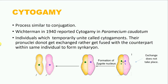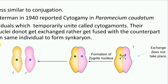Lastly is the process of cytogamy, which is very similar to conjugation. It was reported in paramecium caudatum for the first time by Fichterman. The individuals temporarily uniting are called cytogamonts. The steps of cytogamy are exactly similar to conjugation until the formation of the gamete nuclei. Once the gamete nuclei are formed, they do not get exchanged between the cytogamonts. Instead, the pronuclei of the same cytogamont fuse with one another to form the zygote nuclei. After this fusion the two separate, continue the process just like in conjugation, and result in the formation of daughter paramecia.